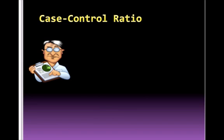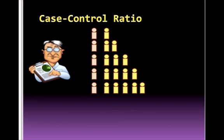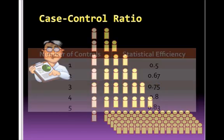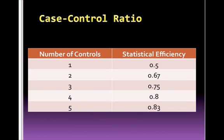The number of controls for each case is as important as the type of controls that are chosen. Statisticians have calculated the most efficient case control ratio. Statistical efficiency is calculated by taking into account the number of controls per each case and estimated variance. This efficiency looks at a 1 to 1 ratio, a 1 to 2 ratio, and so on until one case is mathematically matched to an infinite number of controls. The statistical efficiency does not increase by a large amount after a 1 to 4 ratio. If you matched based on a 1 to 5 or 1 to 6 ratio, the benefit would only be incrementally better than a 1 to 4 ratio.